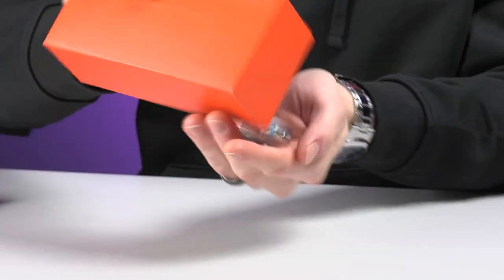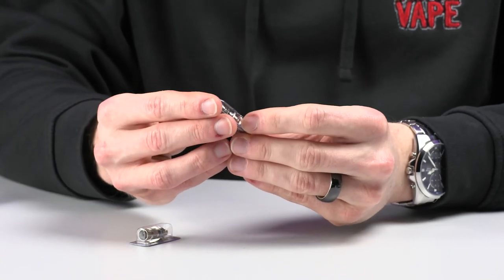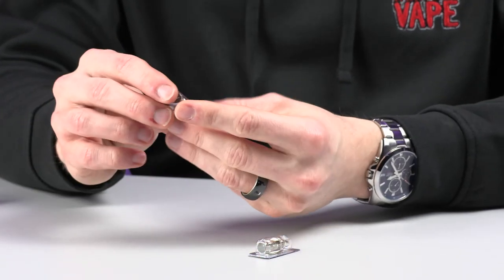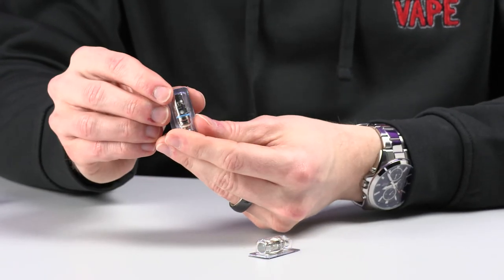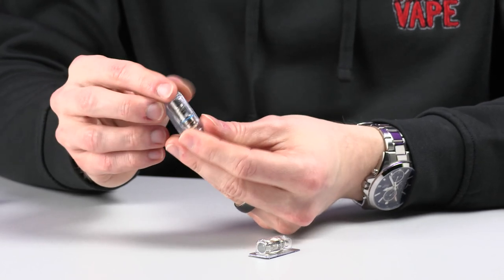And then we get two coils in here. The first coil that we get inside the box is a 1.8 ohm and is between 10 to 14 watts of power. And the next one is a Nautilus 2S, which is a 0.7 ohm coil and is rated between 20 and 25 watts.